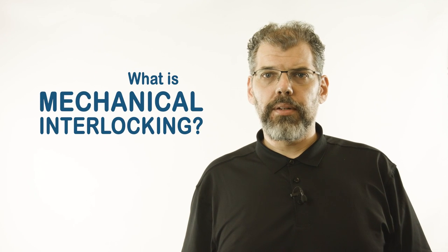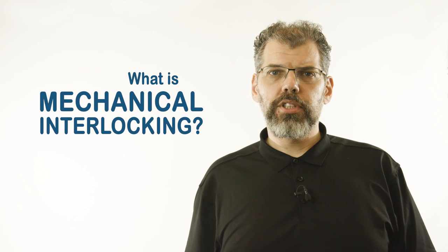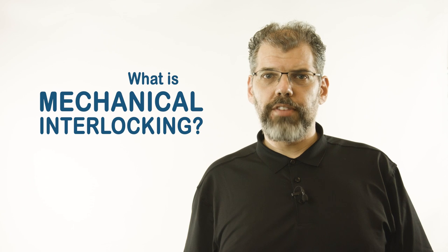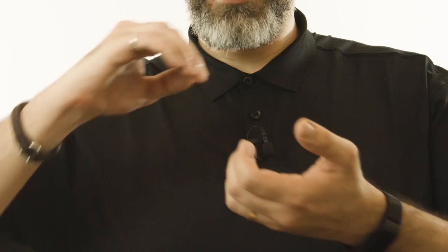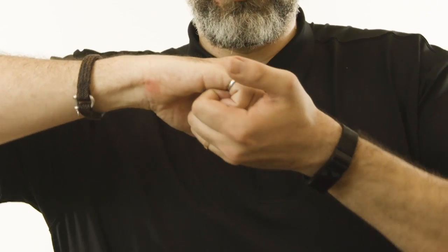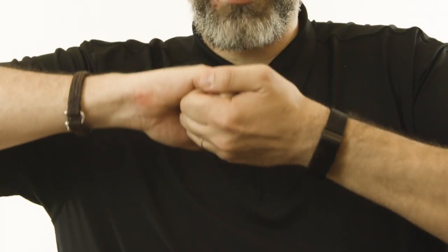So what is mechanical interlocking? This term simply refers to the fact that load is transferred between the fastener and structure through contact. You can do this yourself by mechanically interlocking your hands by curling your fingers to join your hands. If you try and pull your hands apart, you can feel the contact forces between the fingers in each hand. This is the basic principle of mechanically fastened joints.